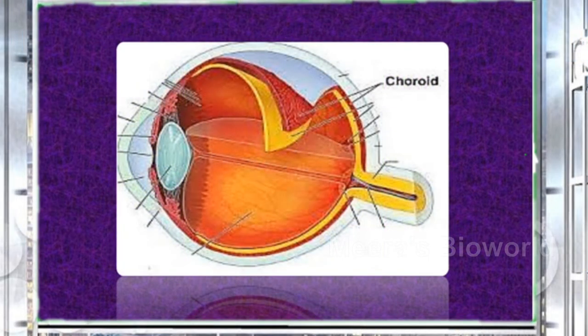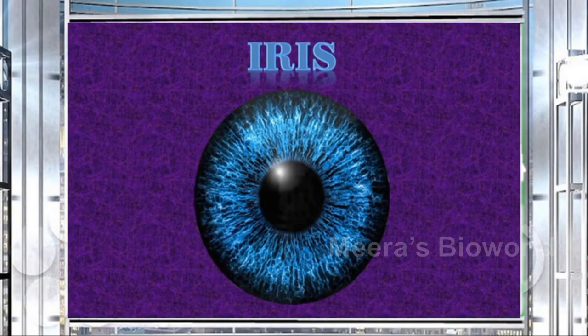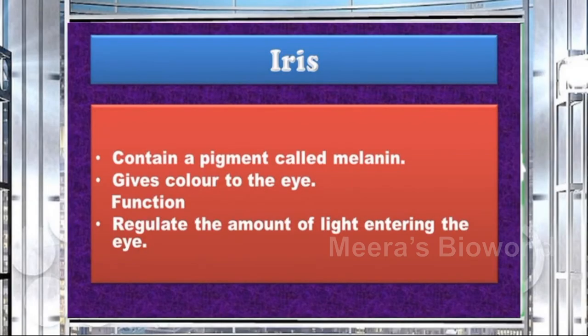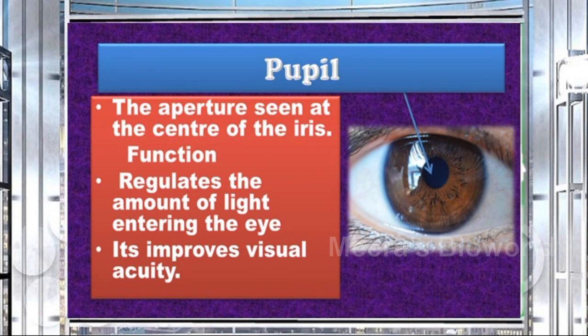Moving to the middle layer: the choroid contains a large number of blood vessels, and its main function is to provide nutrients and oxygen to the tissues in the eyes. The choroid is modified into the iris, pupil, ciliary muscles, and ligaments. The iris is the part of the choroid seen behind the cornea; it contains a pigment called melanin that gives color to the eye and regulates the amount of light entering the eye. The pupil is the aperture at the center of the iris that regulates the amount of light entering the eye, thereby improving visual acuity.